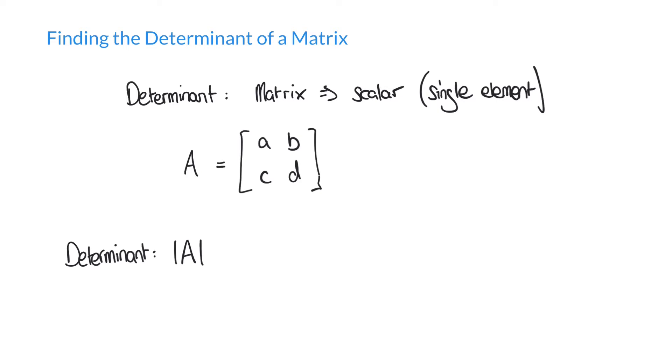One last thing to mention is that only square matrices have a determinant. So we saw different dimensions of matrices in our previous video, but the only ones that will have a determinant are those that are square. So 2 by 2 matrices, 3 by 3, 4 by 4 and so on.